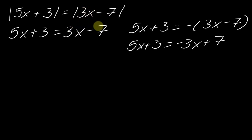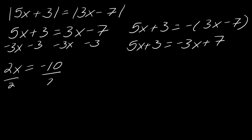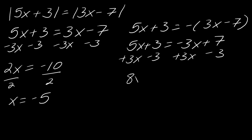So all the signs should flip — now it's negative 3x plus 7. Now solve for x as usual. For the first equation, subtract 3x and subtract 3: 2x equals negative 10, divide by 2, x equals negative 5. For the second equation, add 3x and subtract 3: 8x equals 4, divide by 8, and x equals 1 half. Those are my two solutions.